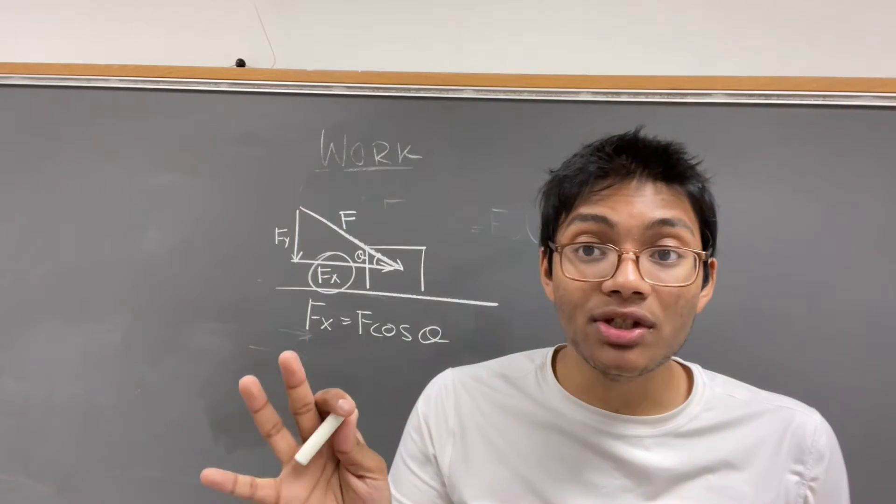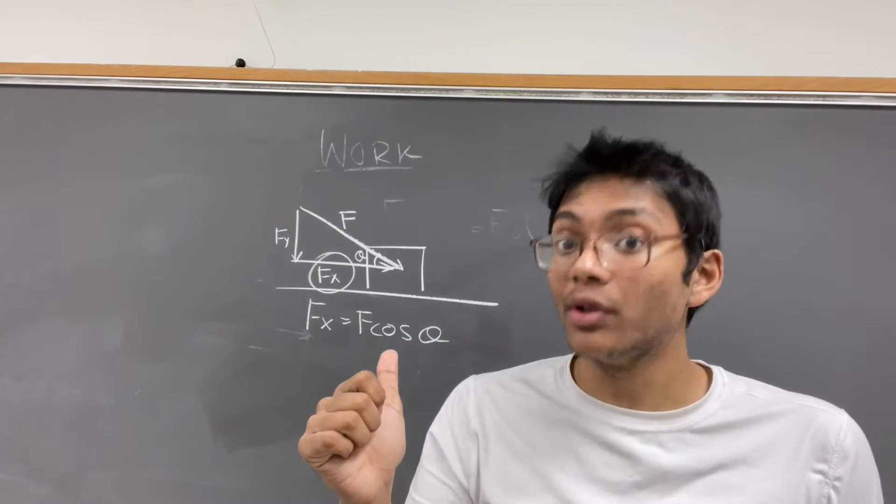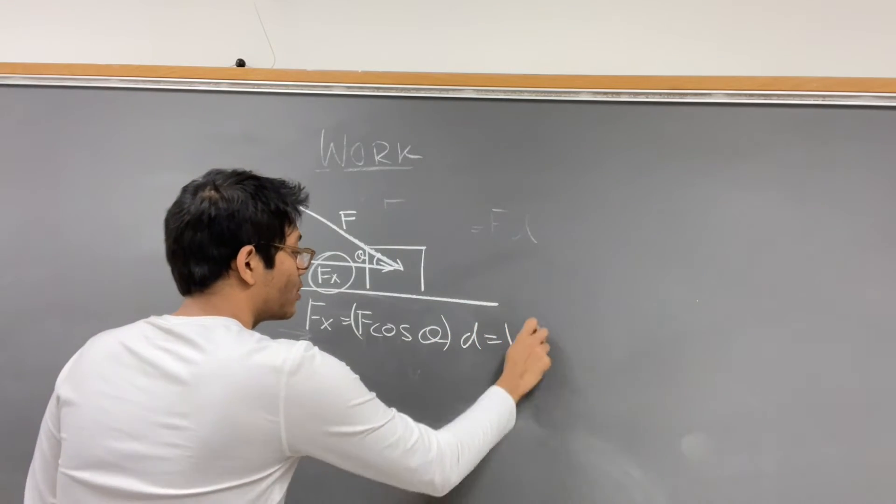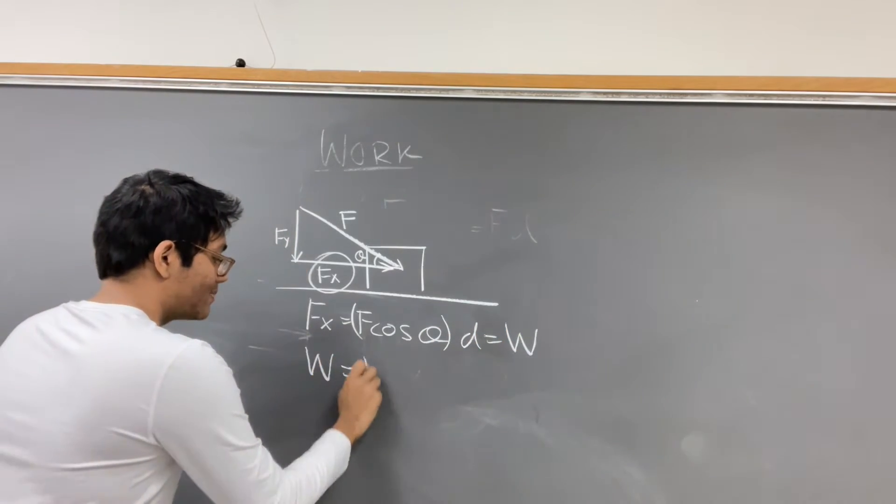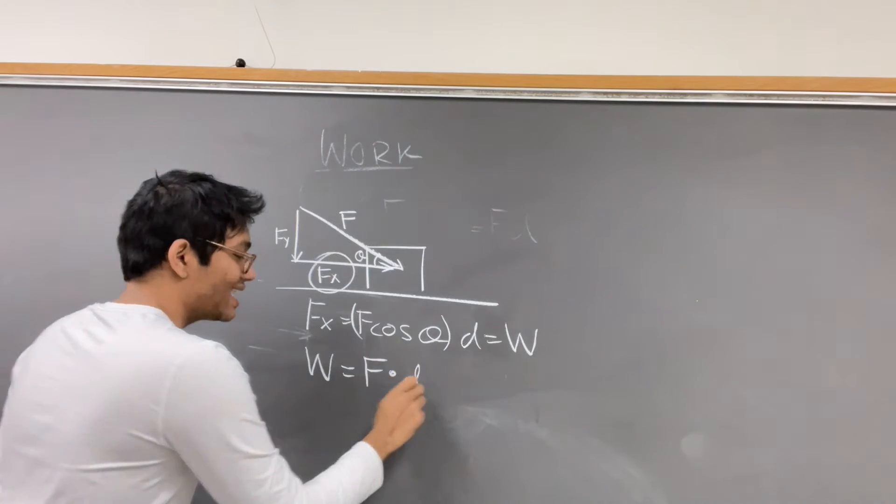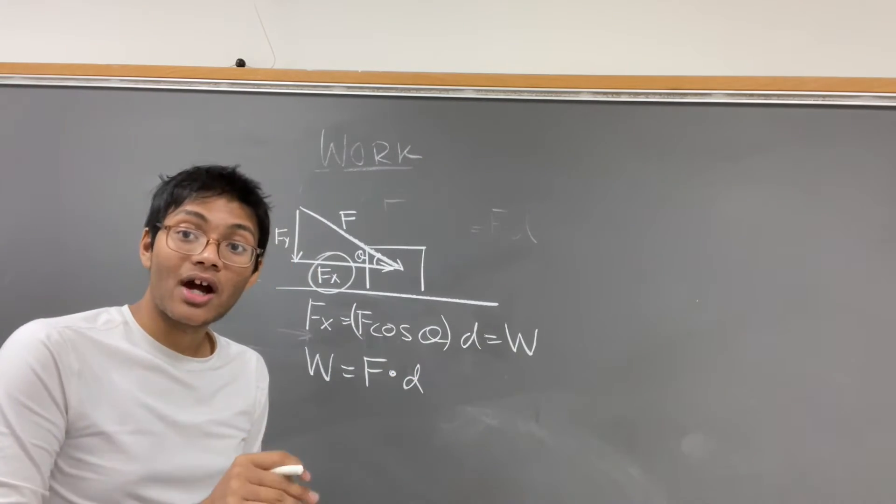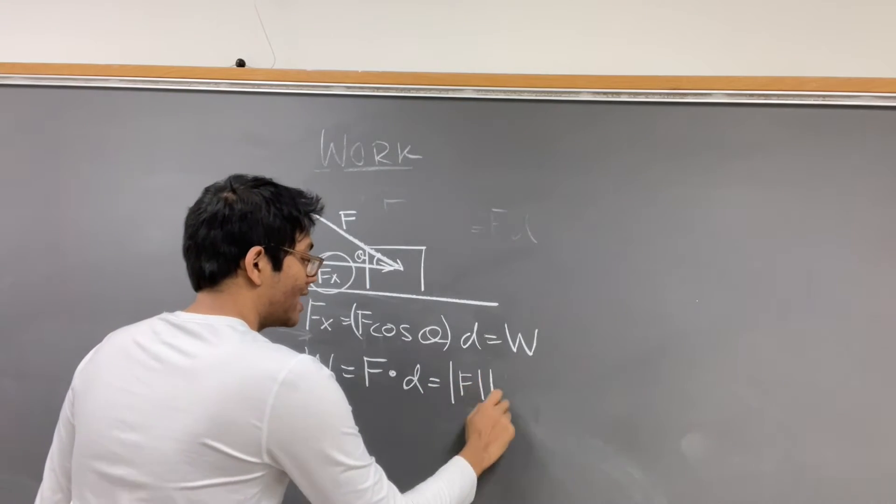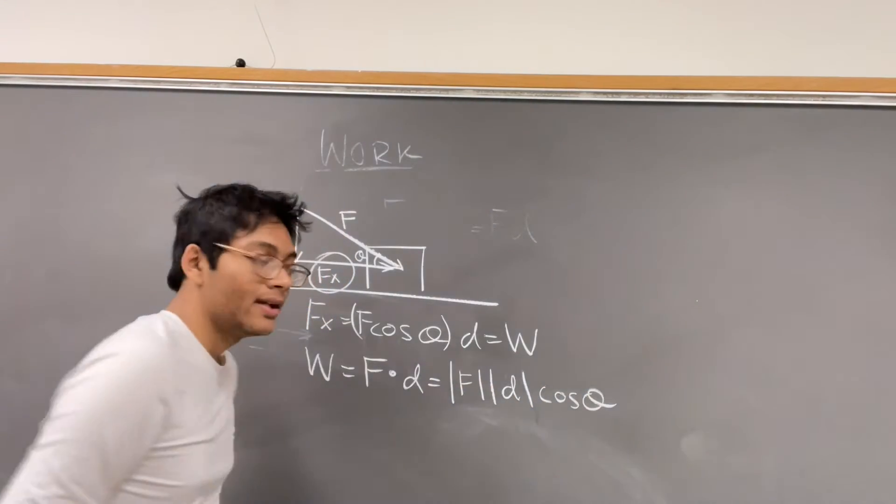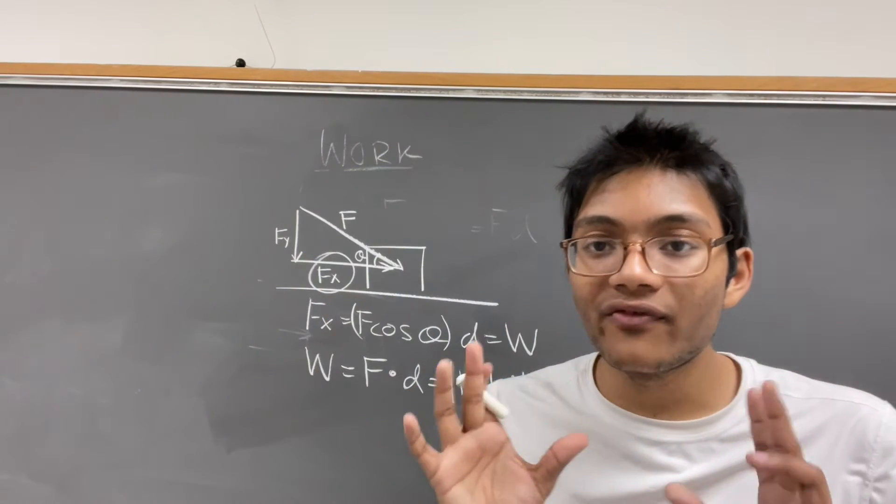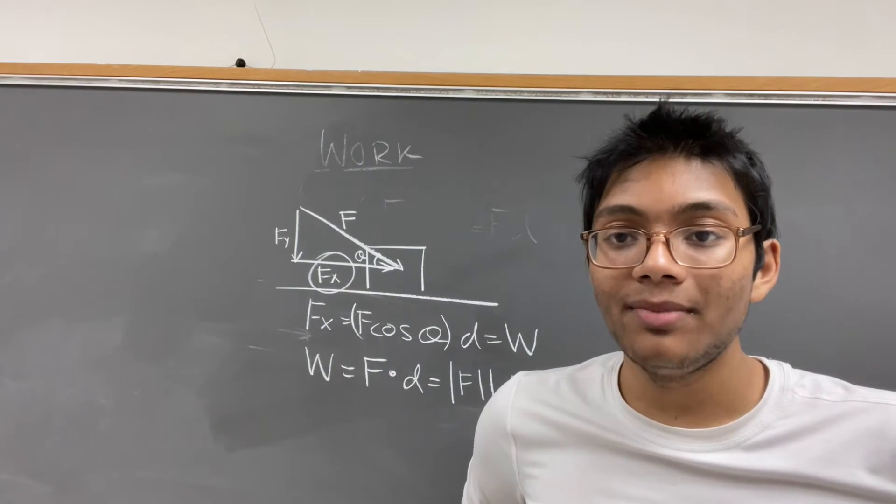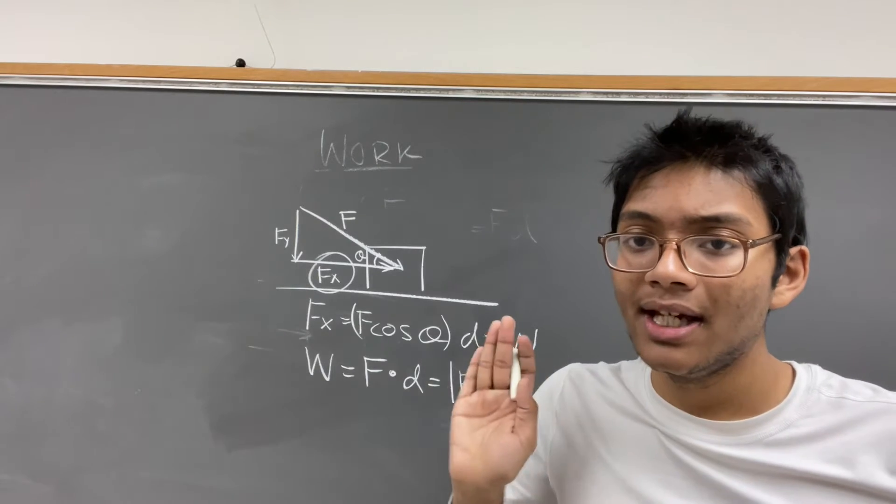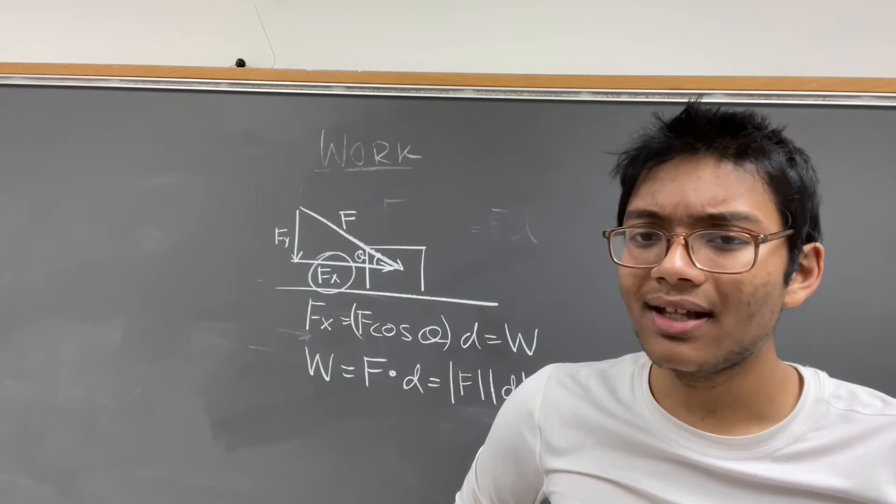But work, we know, is not just proportional to the effective force. It's also proportional to the distance. So we're going to multiply this by distance to get the work done. Work is basically force dot distance, the dot product of the force and the distance, which is another way to write F d cosine theta. Now that's one version of how work can be defined. But that's if the force is constant throughout the distance you exert the work. What if the force isn't constant?